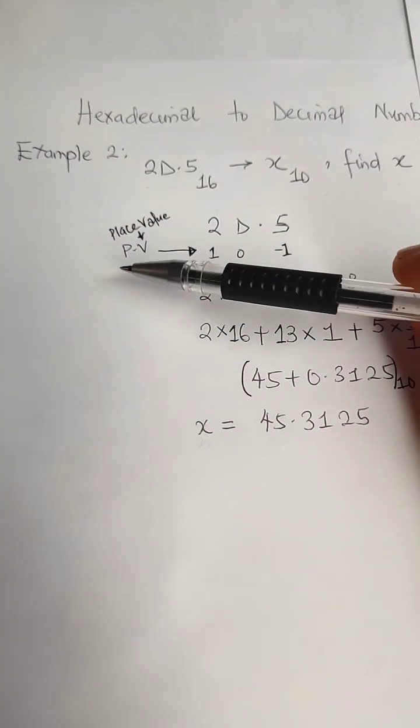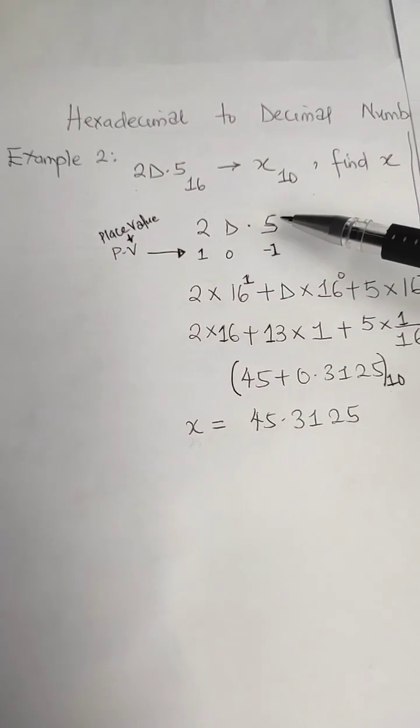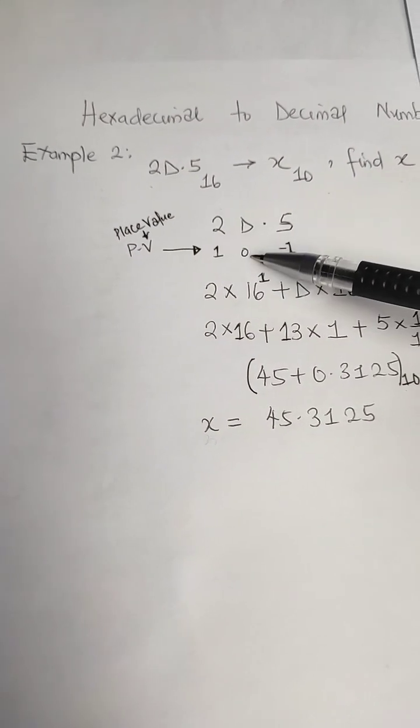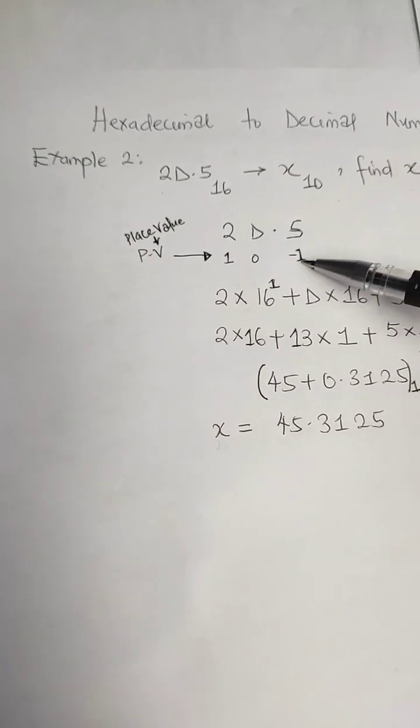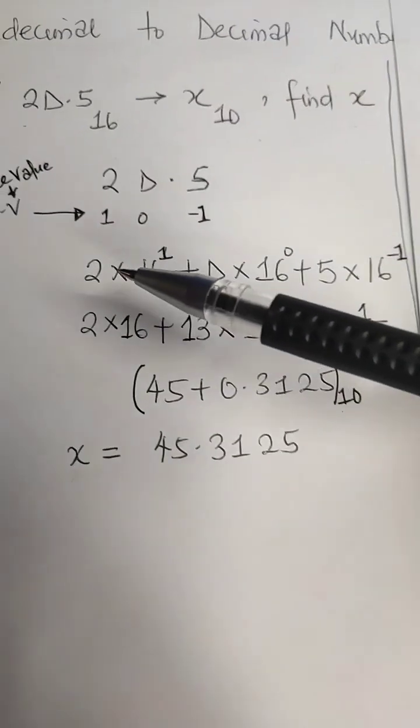The next thing to do is check for the place value. Immediately after this decimal point, we'll have here as 0 and here as 1, whereas this other side will have as -1. Now, 2 times 16 raised to the power 1...